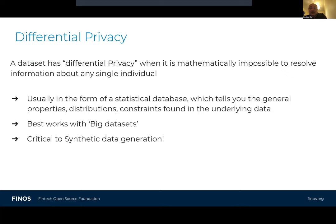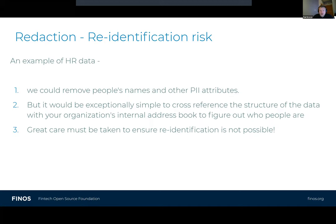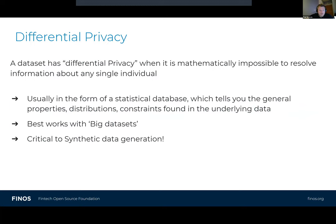With differential privacy, what we're basically doing is creating a statistical model of the data. That statistical model should be general about the data — it should have the properties, the distributions, any constraints, essentially the rule sets of that data. But you must not be able to re-identify an actual individual from that data set. For example, with HR data, if you simply redacted people's names, you could cross-reference it with an HR phone book, and if you hadn't removed salary information, you'd quickly work out everyone's salaries. So differential privacy is quite critical to synthetic data generation.